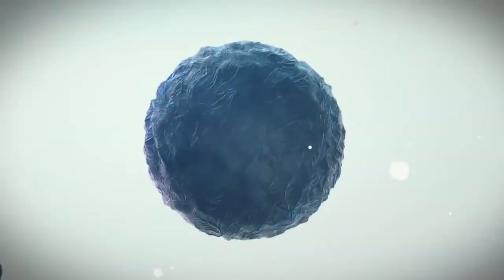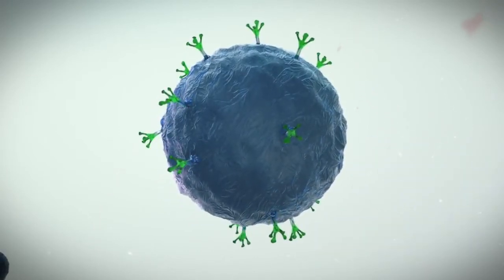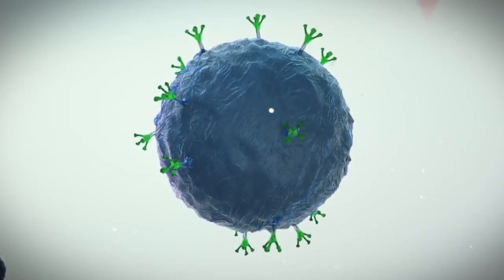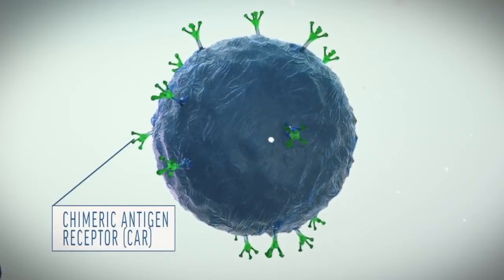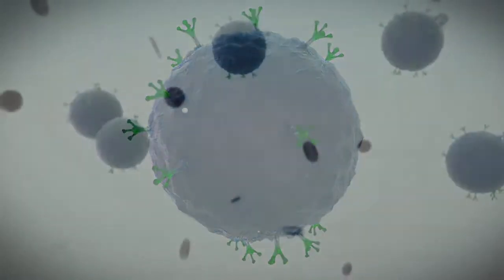Scientists mix the collected T-cells with a virus that has been disabled so it won't cause illness. Instead, that virus carries genetic instructions for the T-cells to grow an artificial receptor, called a chimeric antigen receptor, or CAR, that will track its cancer target and rev up for an attack.